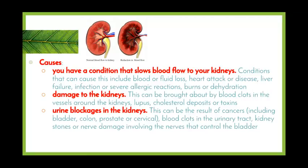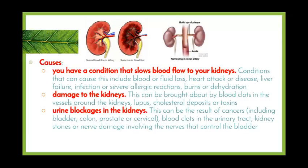Secondly, kidney failure can be caused by direct damage to the kidneys. This can be brought about by blood clots in the vessels around the kidneys, an autoimmune disease known as lupus where the body attacks the kidneys, cholesterol deposits — just like arteriosclerosis in other parts of the body — where deposits within the arteries prevent blood from getting in properly, or different toxins can also cause damage to the makeup of the kidney.